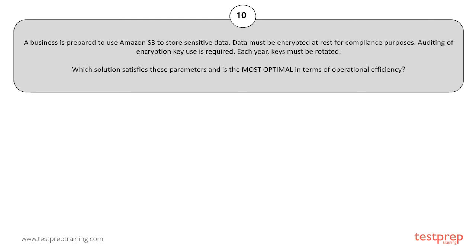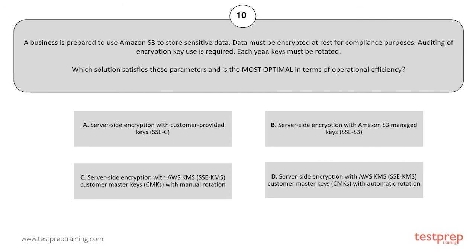Your options are: A. Server-side encryption with customer-provided keys. B. Server-side encryption with Amazon S3 managed keys. C. Server-side encryption with AWS KMS customer master keys with manual rotation. D. Server-side encryption with AWS KMS customer master keys with automatic rotation.